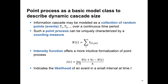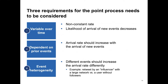A point process is a collection of random points or events over a continuous time period. Such a process can be uniquely characterized by a counting measure N of t, which counts the number of events up to a given time t. Based on that counting measure, we define an intensity function lambda of t, which looks at the likelihood of an event in a small time interval at t — essentially the derivative of the counting measure.